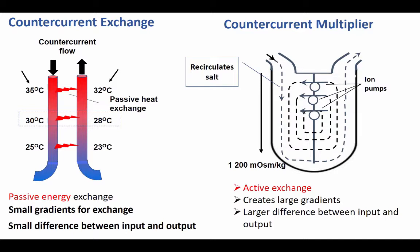There is also going to be a much larger difference between the input and output energies. For example, the input port in the kidney will have an osmolality of about 300 milliosmoles per kilogram, whereas the output flow will have an osmolality of only about 100 milliosmoles per kilogram. We can now summarize the major effects of these two mechanisms.